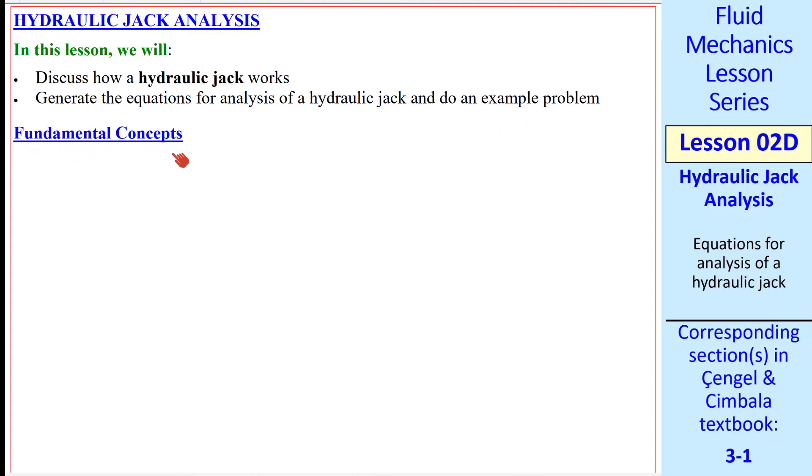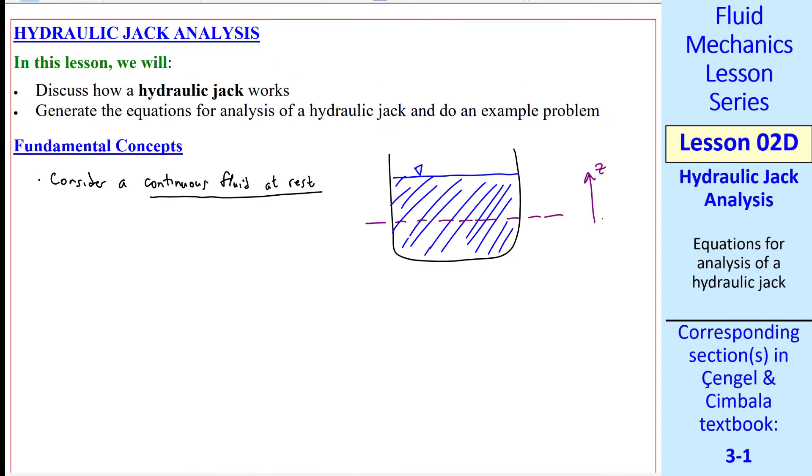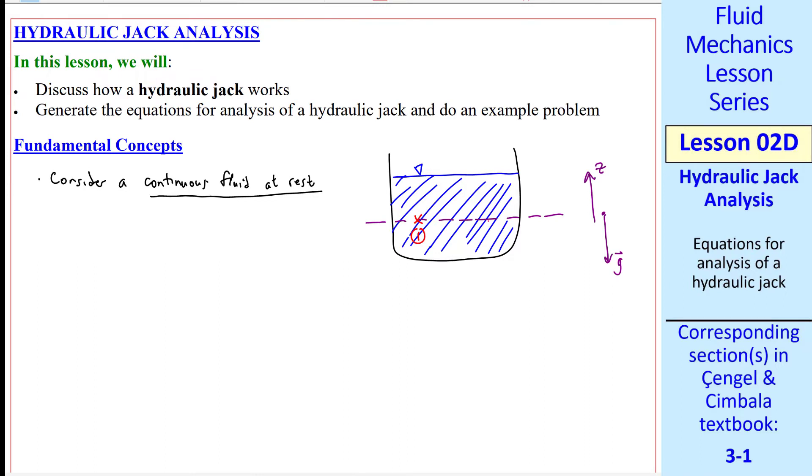First, some fundamental concepts. Let's consider a continuous fluid at rest. For example, a liquid exposed to atmospheric pressure at the surface. We'll let z be up and the gravity vector be down, as is our usual convention. If two points, 1 and 2, are on the same horizontal plane, in other words at the same z location, then P1 is equal to P2.